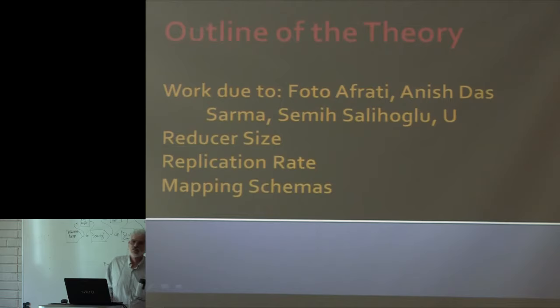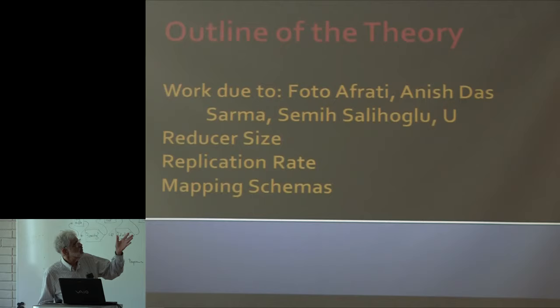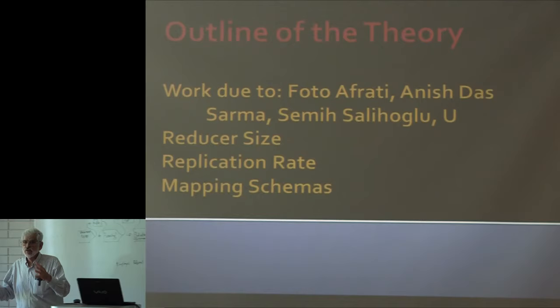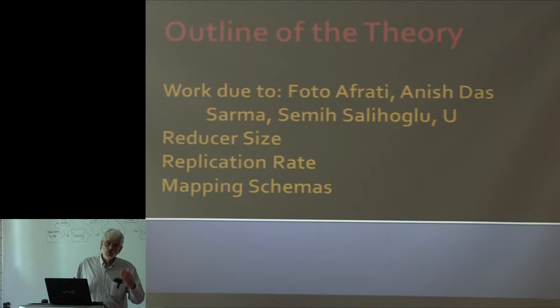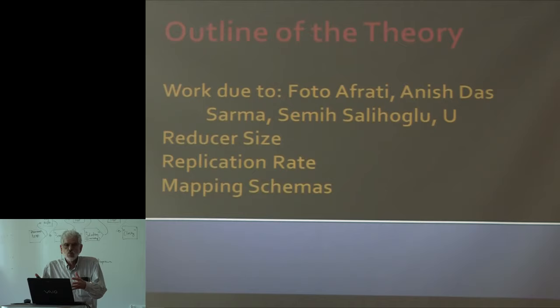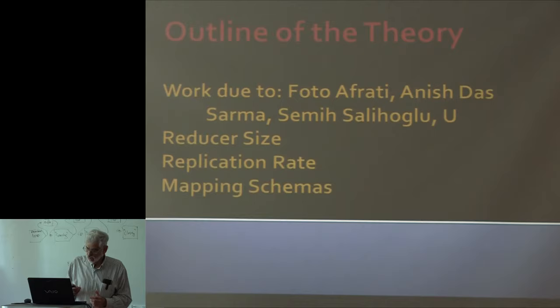Let me start the theory. I want to acknowledge my co-authors on this theory: Foto Afrati, Anishtha Sarma (a recent Stanford graduate), and Semih Salihoglu (graduating this year). There are three notions I want to talk about: reducer size q — the number of inputs a reducer can take; replication rate r — how many key-value pairs you generate per input; and this notion of a mapping schema, which is a description of the algorithm. The theory says that the existence of a mapping schema tells you: if you want a small reducer size, you need a big replication rate.